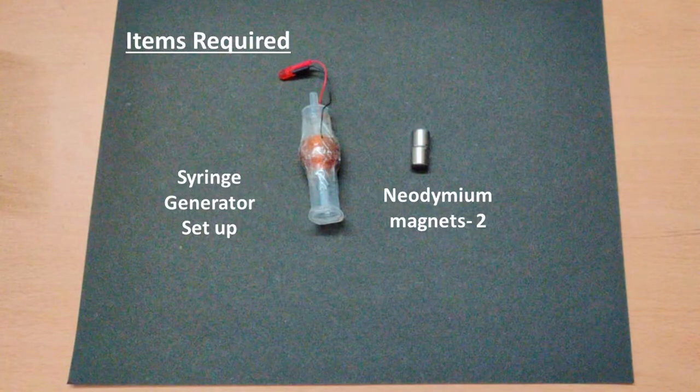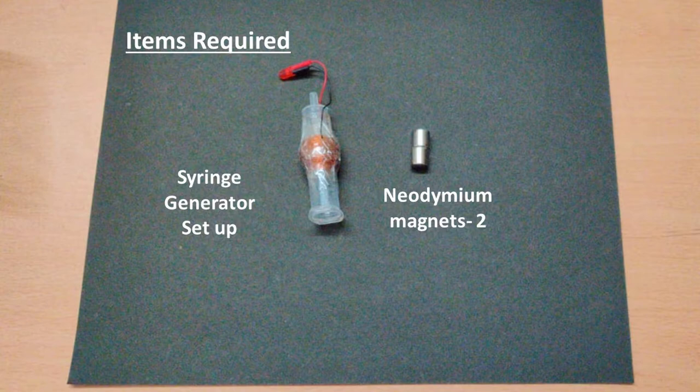For this, we will need the syringe generator setup available with the ILP science experiment kit. We will also need two neodymium magnets.